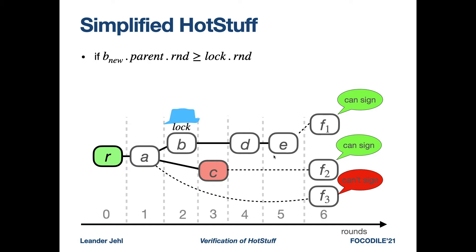The parent of F2, C, has round 3, which is larger than 2. So both of these can be signed, but F3 has parent A in round 1, so F3 cannot be signed.